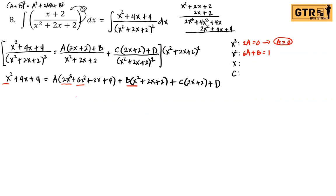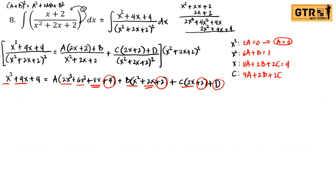For the coefficient of x: we have 8A + 2B + 2C = 4. For the constant: we have 4A + 2B + 2C + D = 4.